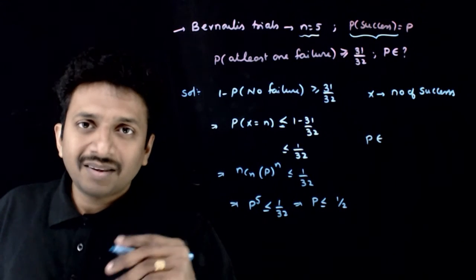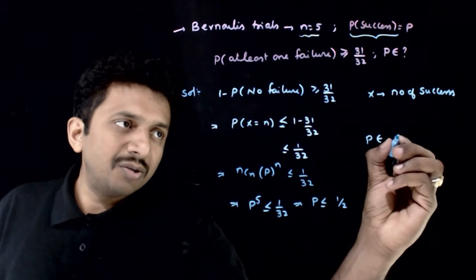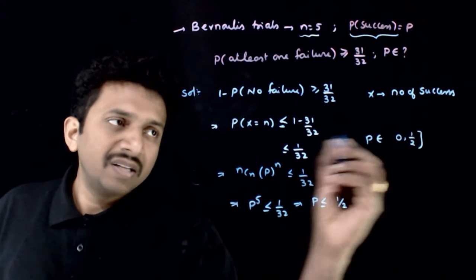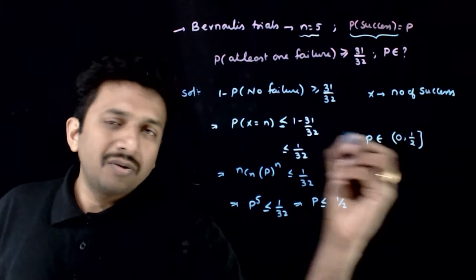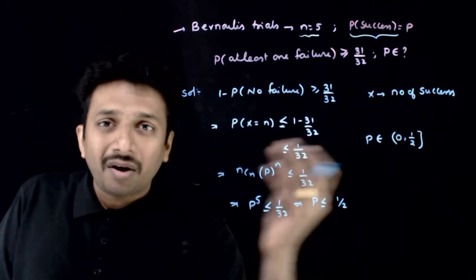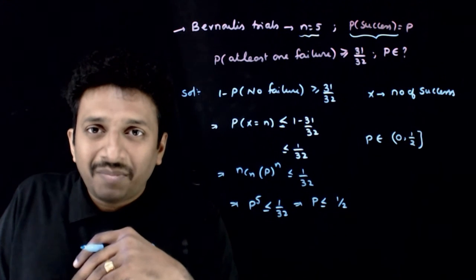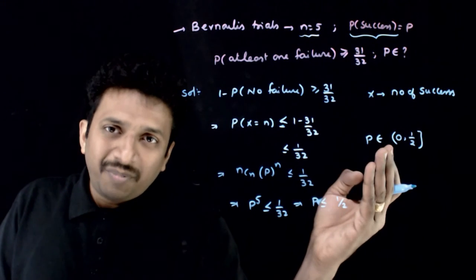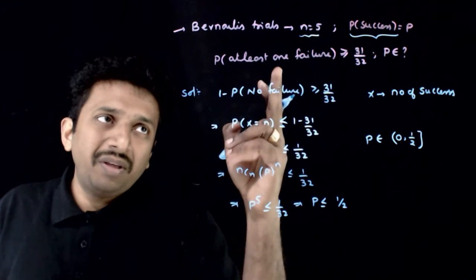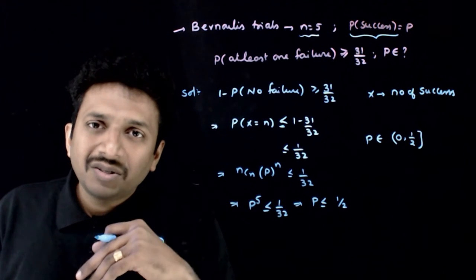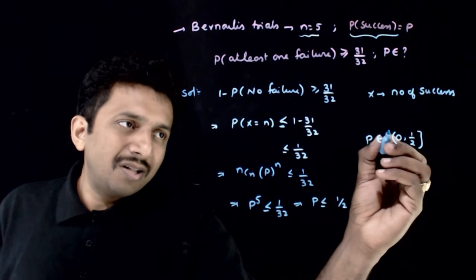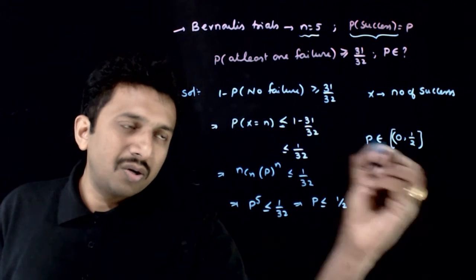So p belongs to the interval 0 to one-half. You can think of 0 as open or closed — it doesn't really matter, because if p is 0, this will be valid; at least one failure will be equal to 1. So you can use a closed interval at 0 as well.